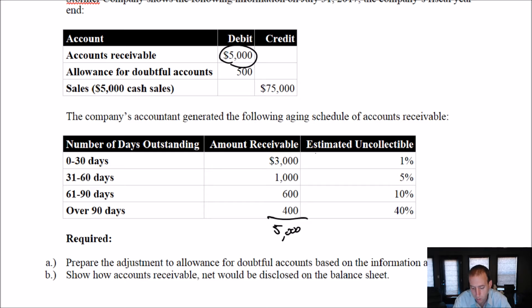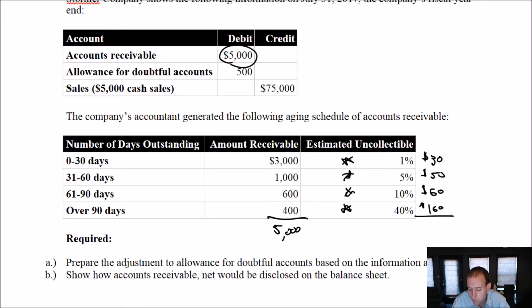We think 1% of the $3,000 bucket is going to go bad, so $30 is estimated uncollectible. $1,000 times 5% means $50 goes uncollectible. $600 times 10% is $60 we think is going to go bad. $400 times 40% is $160. Adding those up — $30, $50, $60, $160 — the total amount we think is going bad is $300 even. It certainly doesn't have to be an even number; it just happened that way here.